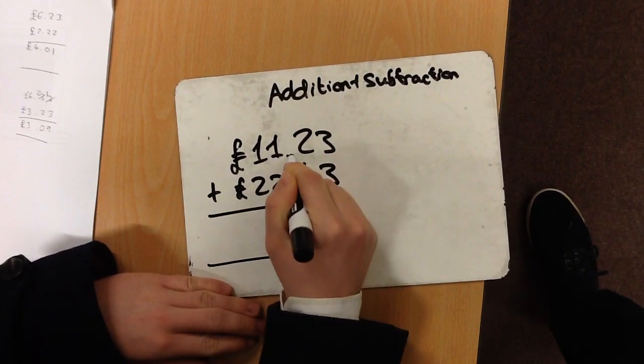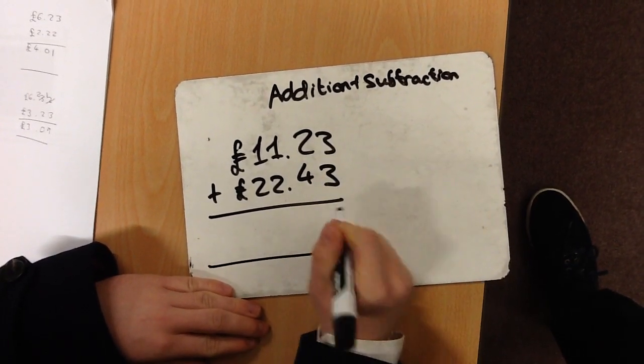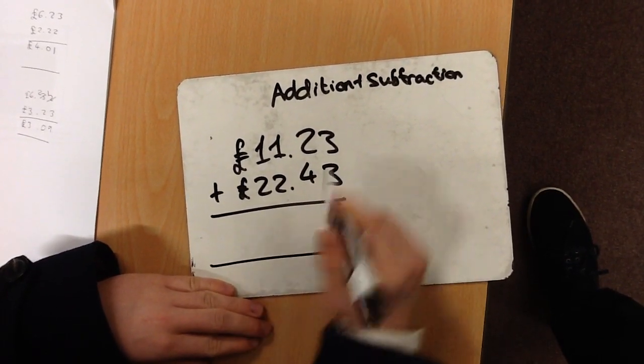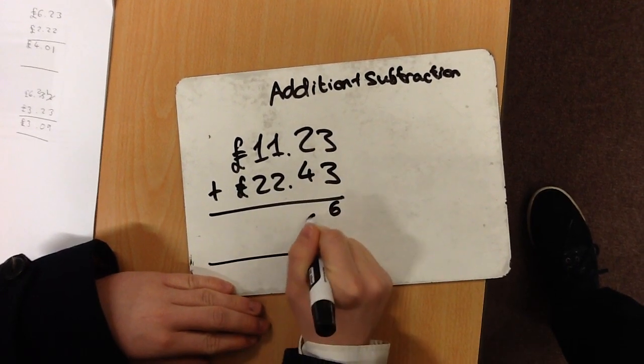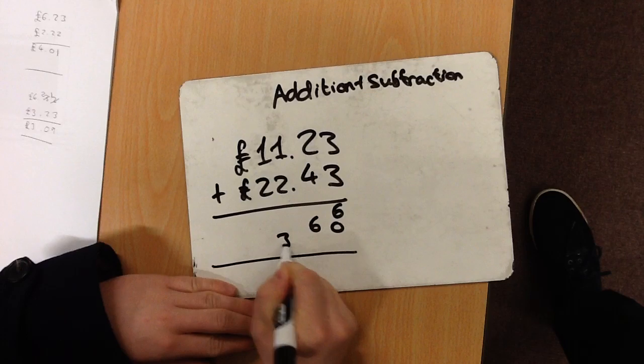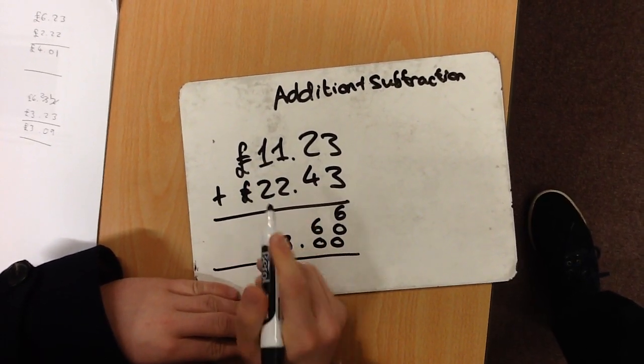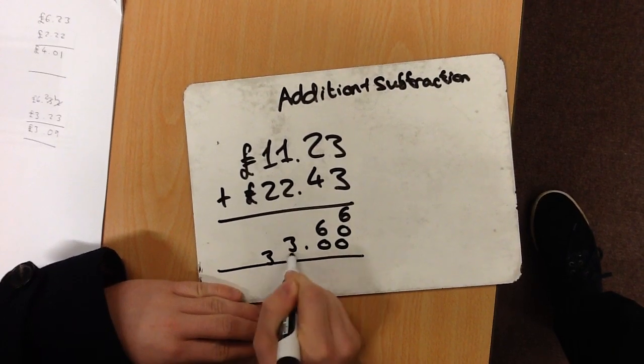Now remember, our decimal point always needs to go in the same place. So, £3 add £3 is £6. £20 add £40 is £60. £1 add £2 is £3, the decimal point going in the same way. And £10 add £20 is £30.